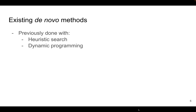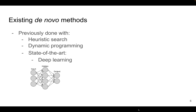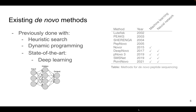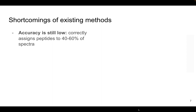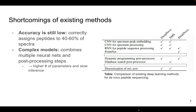Different methods have been proposed to tackle this task, ranging from heuristic search and dynamic programming in the past. More recently, machine learning methods and neural networks in particular have provided state-of-the-art results on this problem. Some of these existing methods have their own shortcomings and accuracy on de novo sequencing overall remains relatively low, with models being able to correctly identify around half of the spectra. Additionally, most of these existing neural network-based approaches, as you can see in a comparison on the right, rely on complex models which combine multiple neural networks and complex post-processing steps, which drives up the number of parameters and complexity.